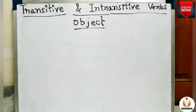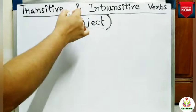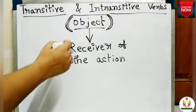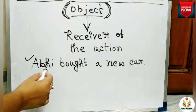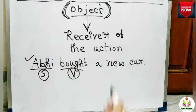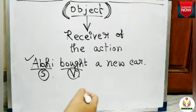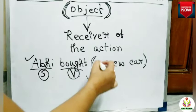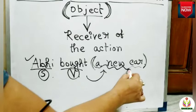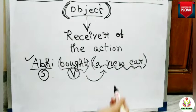Before moving on to today's discussion on transitive and intransitive verbs, we need to have a clear concept regarding an object. An object is the receiver of the action done by the subject in a sentence. Look at the sentence: 'Abhi bought a new car.' Here, Abhi is the subject, bought is the verb. If I ask 'Abhi bought what?' the answer is 'a new car.' The action bought is received by the phrase 'a new car,' helping to complete the meaning of the sentence, so it works as an object.